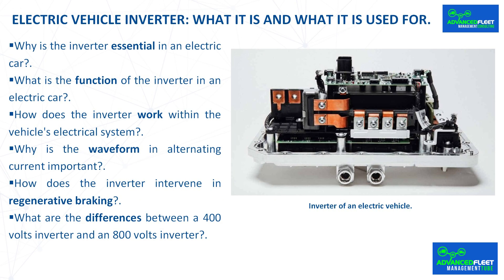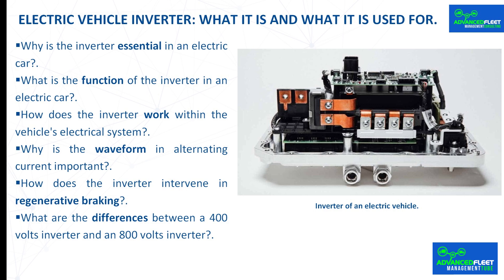If the motor were powered by fixed frequency alternating current, then its speed would be fixed. However, the inverter is responsible for supplying the motor with variable frequency alternating current that adjusts to the accelerator pedal in order to modulate the speed. A higher frequency results in a higher speed of the electric motor.